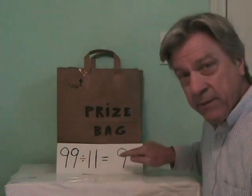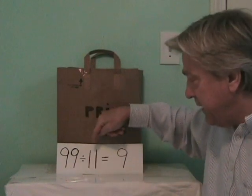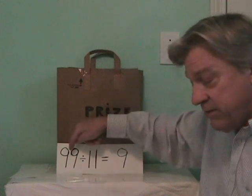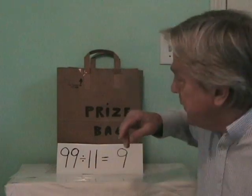Okay everybody, it's Mr. Hubley again — you did an excellent job on dividing by 11. As you can see, dividing by 11 is pretty easy; it's just the opposite, like all division is just the opposite. Because 9 times 11 is 99, so 99 divided by 11 is 9. It's just the reverse operation — 9 times 11 is 99, so 99 divided by 11 is 9. Let's take a look in the prize bag and see what you can win.